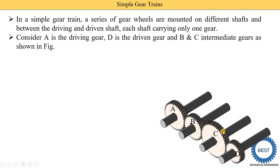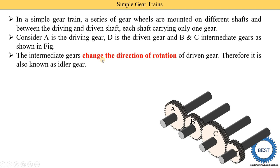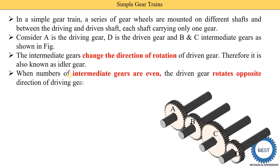The intermediate gears also change the direction of rotation — clockwise or anti-clockwise. They are therefore also known as idler gears. When the number of intermediate gears is even — two, four, six, eight, ten — here in this diagram there are two intermediate gears, which is an even number.